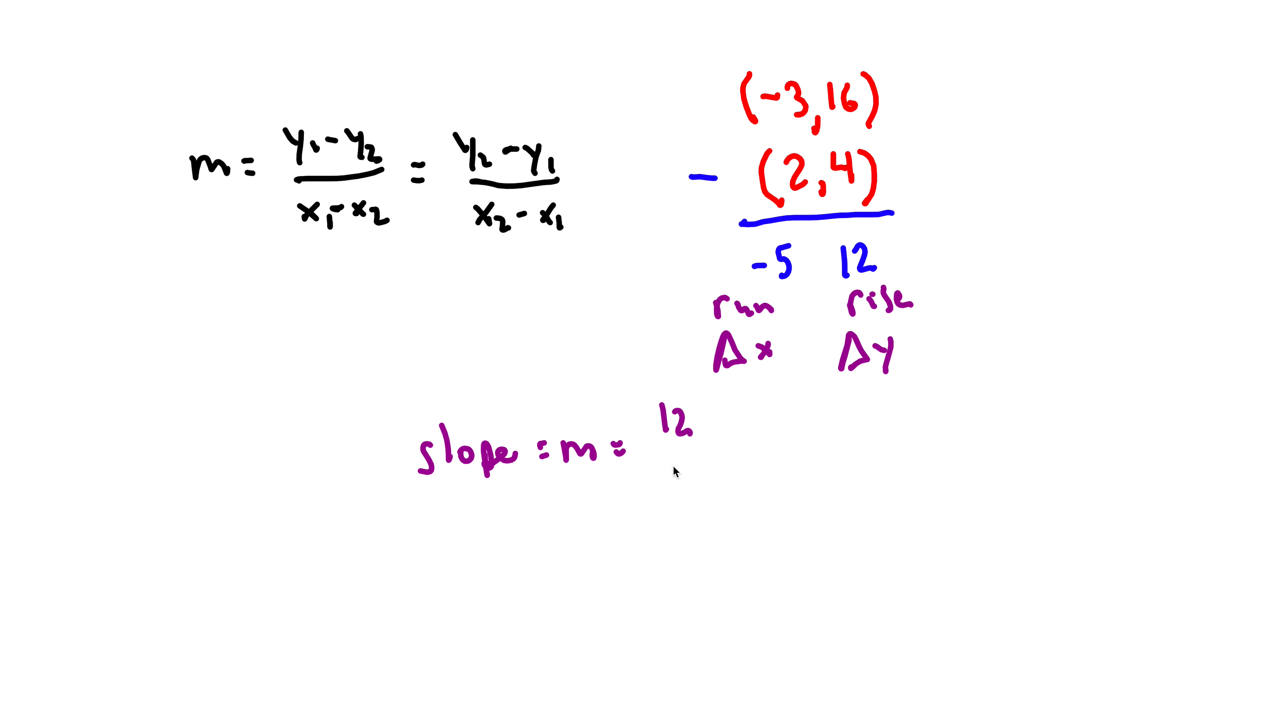It would be 12 over -5. Most people would write -12/5. This is useful if you ever had to graph the thing or figure out what the slope means. That is, we're seeing a change in 12 units, a decrease in 12 units, in the y values for whatever an increase of 5 of the x values would be.